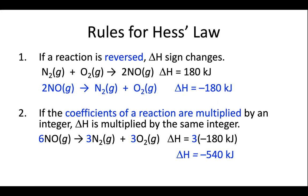Second rule, if the coefficients are multiplied by a number, then delta H is multiplied by the same number. Now I said integer here, but actually it doesn't have to be an integer. Sometimes you'll see one half or something like that, and that's okay too. So in this case, instead of having 2NO, now I have 6. So I've multiplied by 3. So all I do is multiply my delta H by 3. I get negative 540 kilojoules per mole.